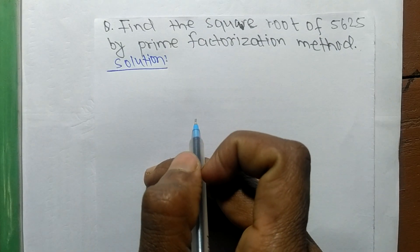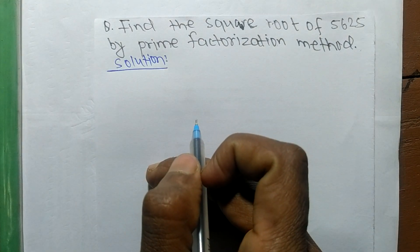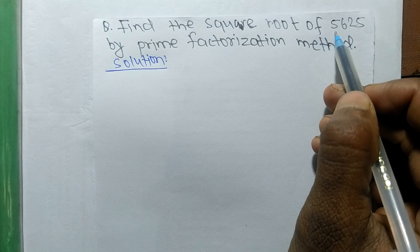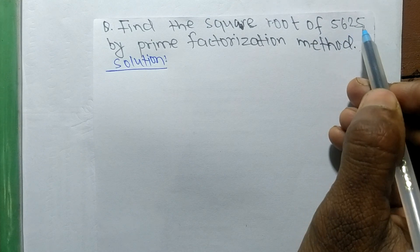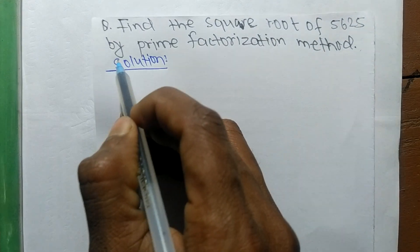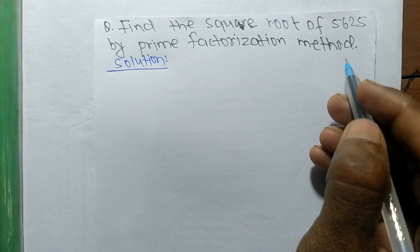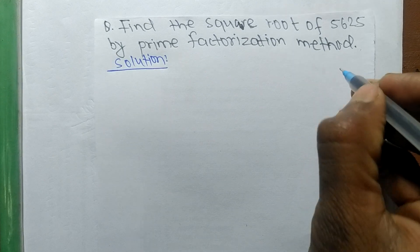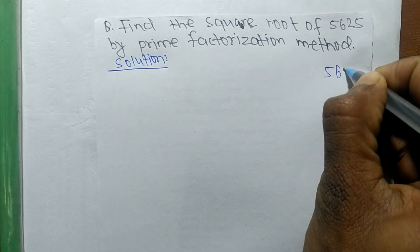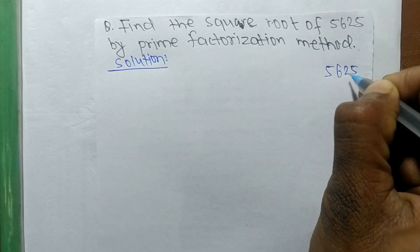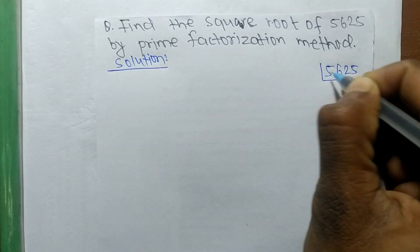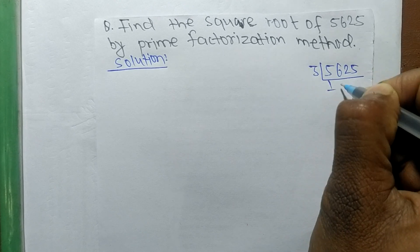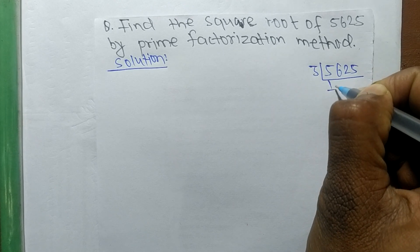Today in this video we shall learn to find the square root of 5625 by the prime factorization method. First, we find out the prime factors of 5625, so it is 3 times 13, 3 times 8.